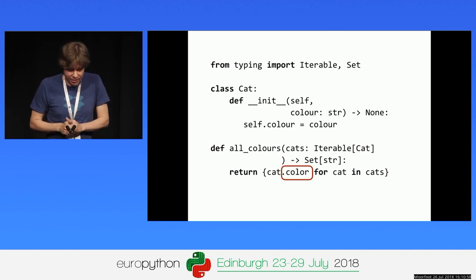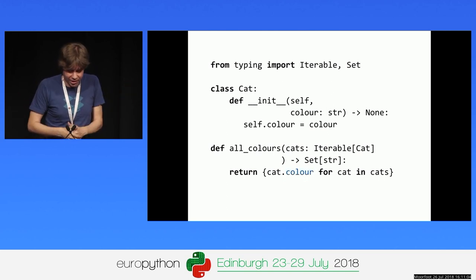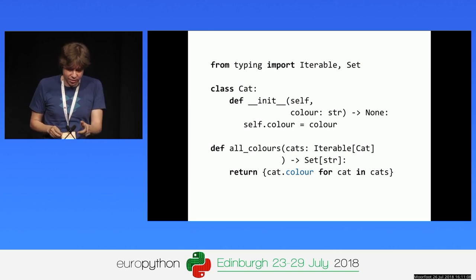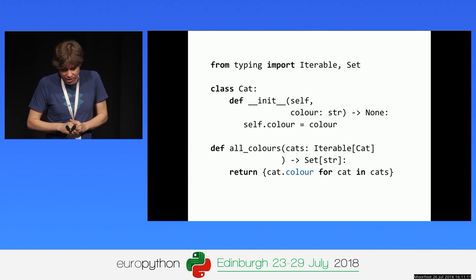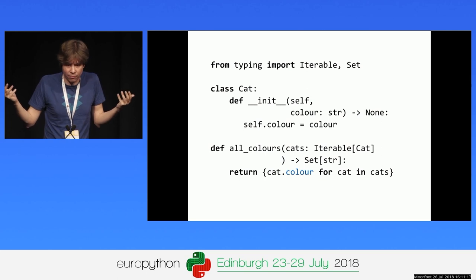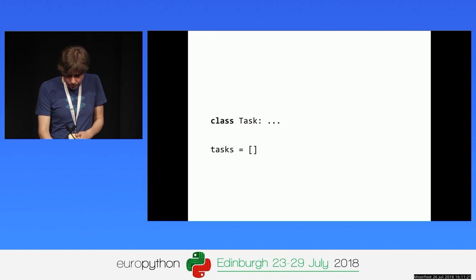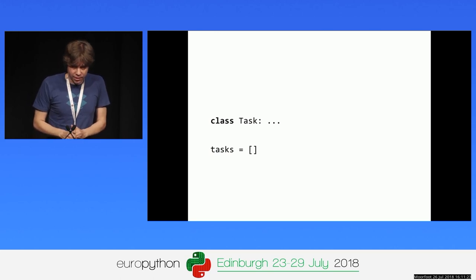If we run mypy against this program, it finds another error — we actually misspelled the color attribute. Once corrected, mypy is happy. Mypy needs to know the type of Cat to know that the attribute is misspelled; otherwise it has no idea what is supposed to be inside Cat.